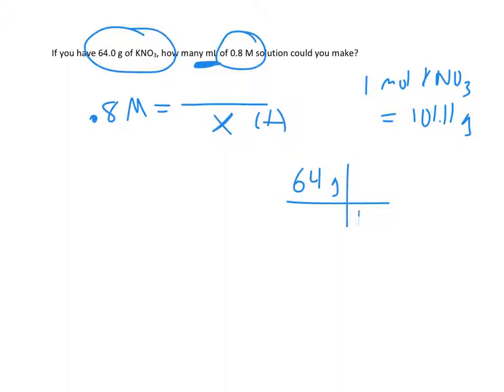So 64 grams, and it takes 101.11 grams to get a mole. So I do not have enough to get a mole with 64 grams. But let's confirm. I get 0.63 moles. That should make sense. So that number is going to go up here, 0.63 moles.